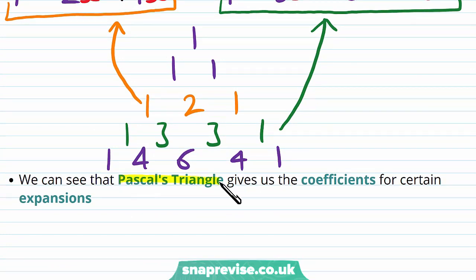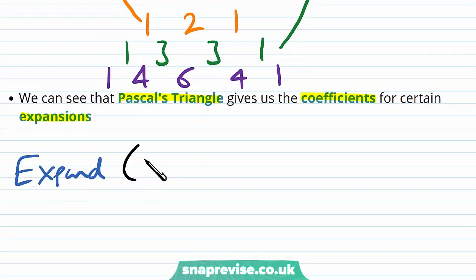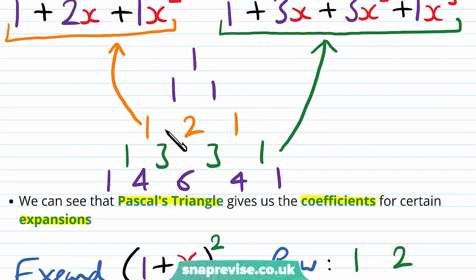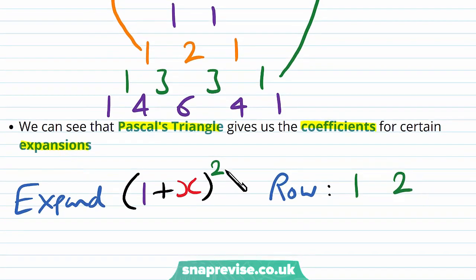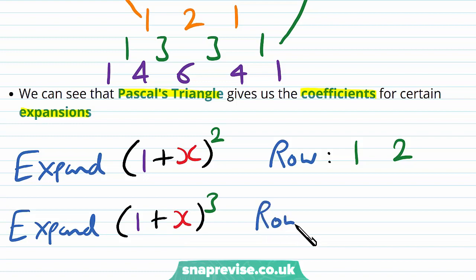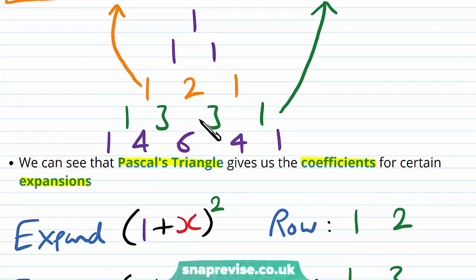So we can see that Pascal's triangle gives us the coefficients for certain expansions. If we wish to expand (1 plus x) squared, we examine the row which begins with 1 and then 2 — that is the third row of Pascal's triangle. This is because the 2 corresponds to the power we are expanding. Similarly, if we wish to expand (1 plus x) cubed, we look at the row which begins 1 and then 3, giving us the row 1, 3, 3, 1 from Pascal's triangle.